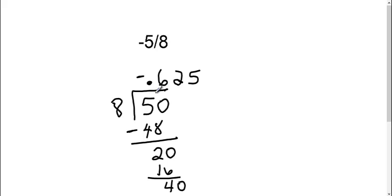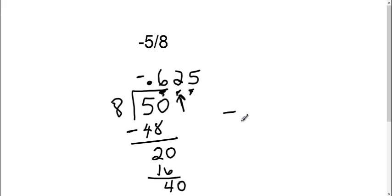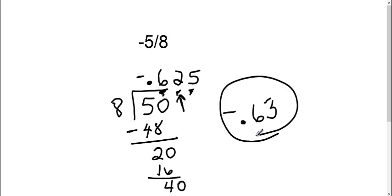Now it says round to the nearest hundredth place. Here's our tenths place, here's our hundredths, here's our thousandths. So if I want to round to the nearest hundredths, since this is a 5 on the right side, I'm going to round up. So my answer is going to be negative 0.63 as our decimal answer.